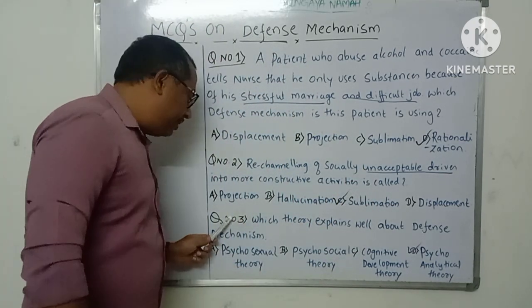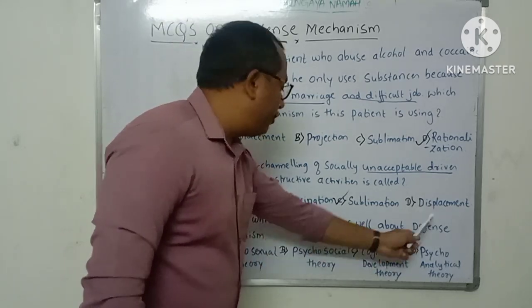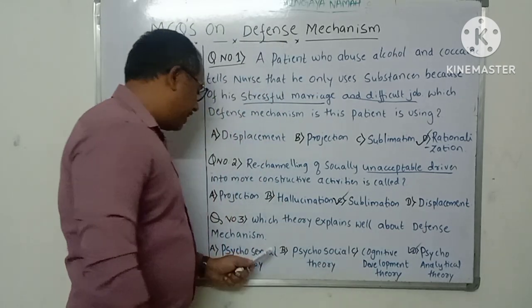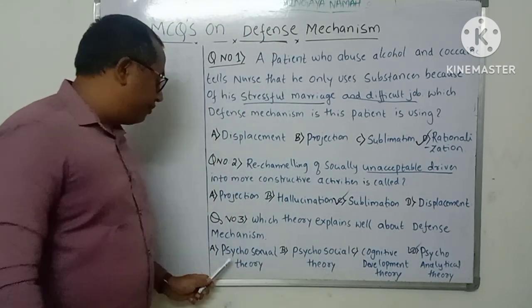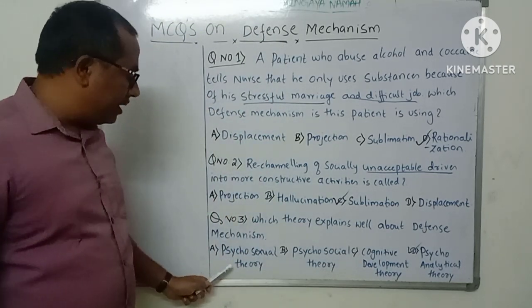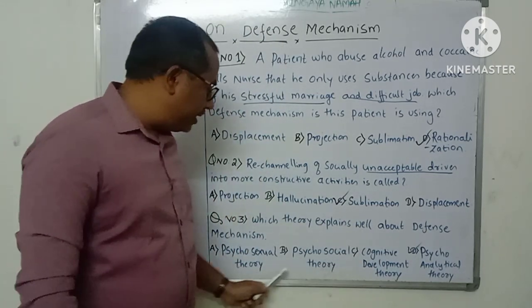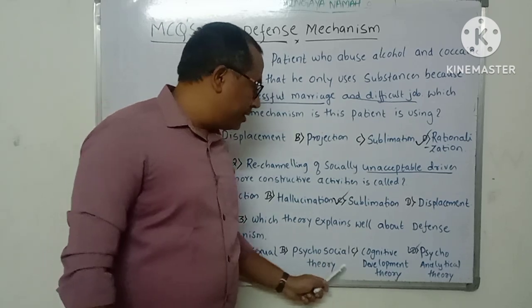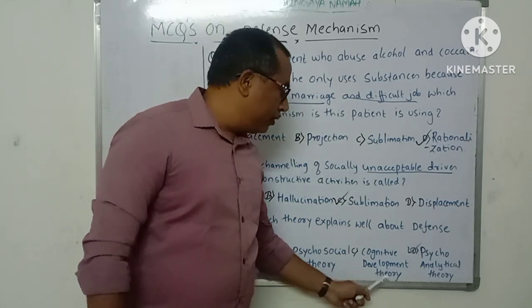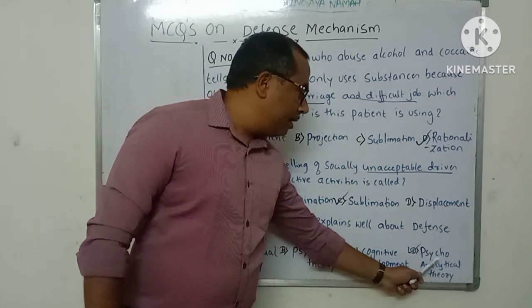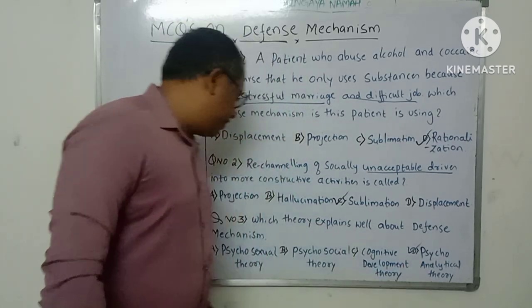Question number three: Which theory explains defense mechanisms best? The options are: psychoanalytical theory, psychosexual theory, psychosocial theory, cognitive development theory, and psychoanalytical theory. The psychosexual theory is described by Sigmund Freud and tells about the sexual development of human beings. The psychosocial theory is explained by Erikson and explains social development.